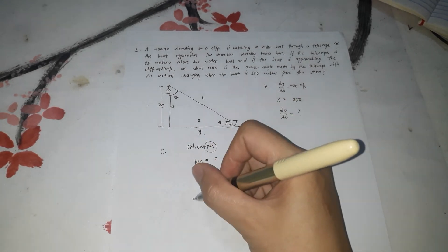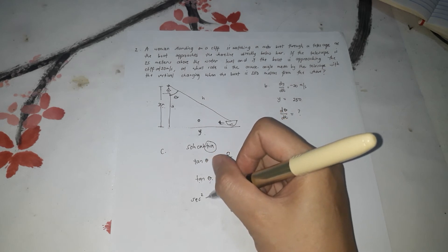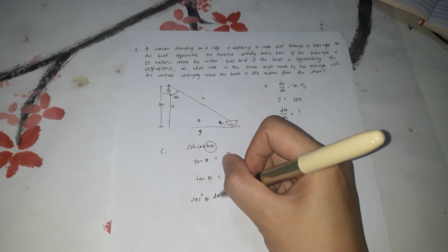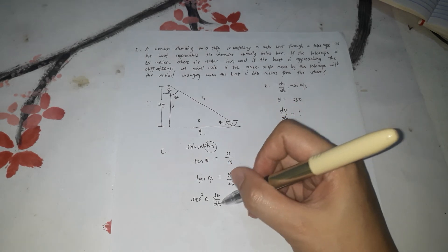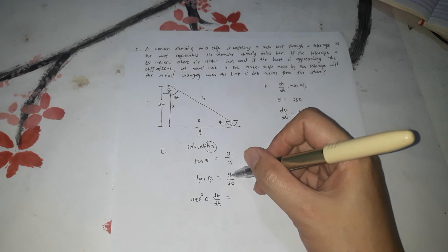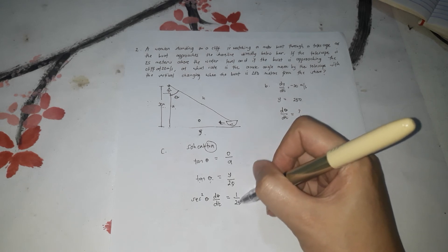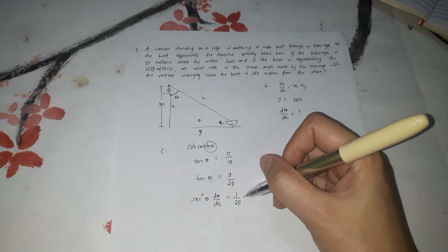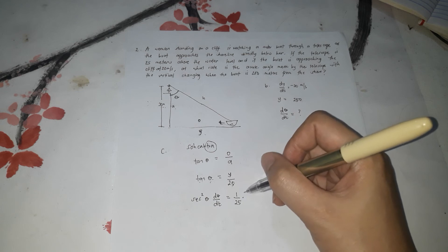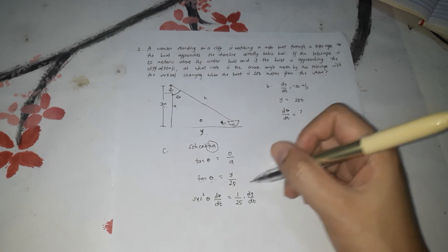Taking the derivative: the derivative of tan θ is sec²θ · (dθ/dt) = (1/25)(dy/dt). This is our differentiated formula.